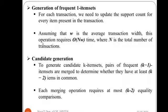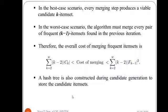Next we will see candidate generation. To generate candidate k-item sets, pairs of frequent (k-1)-item sets must be merged to determine whether they have at least k-2 items in common. Each merging operation requires at most k-2 equality comparisons. In the best case, every merging step produces a viable candidate k-item set. In the worst case, the algorithm must merge every pair of frequent (k-1)-item sets found in the previous iteration, and the cost of comparing k-2 equalities and merging them applies accordingly.